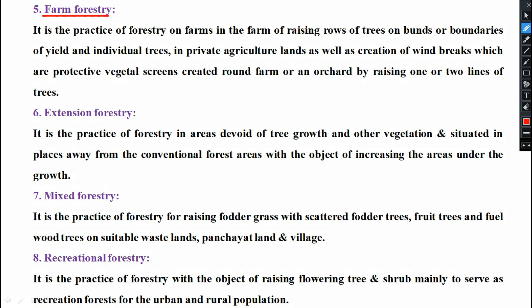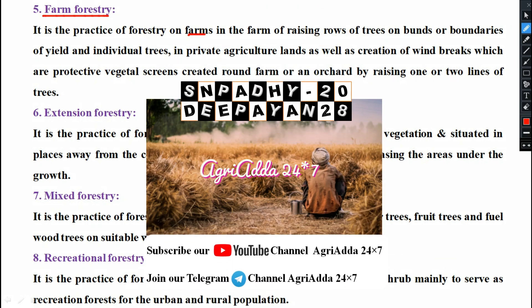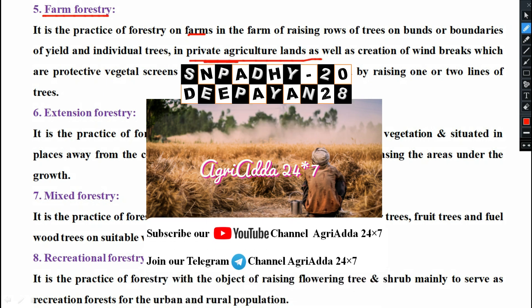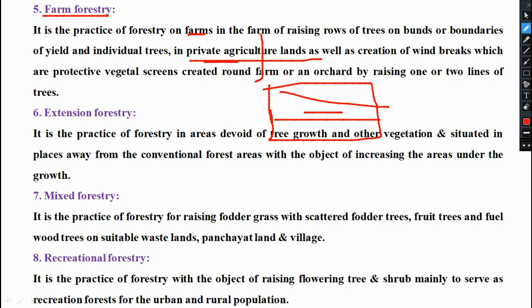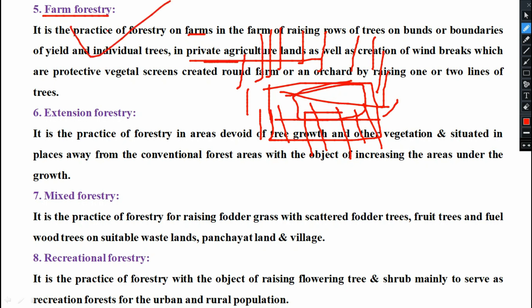Next is farm forestry. It is the practice of forestry on farms in the form of raising rows of trees on bunds or boundaries of fields, and individual trees in private agricultural land, as well as the creation of windbreaks — protective vegetal screens created around a farm or orchard by raising one or two lines of trees. In the border of a farm where agricultural crops are grown, forest plants will be grown either for forestry products or to act as windbreaks for those agricultural plants.